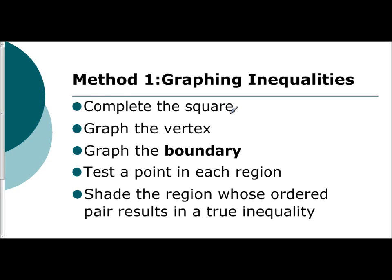You're going to complete the square — transforming it from standard form into vertex form, our general form. And what we can do is use that general form to graph the vertex, the axis of symmetry, find two other points on the graph, and then graph the boundary.